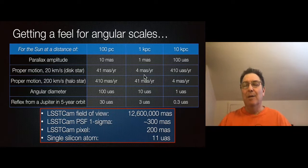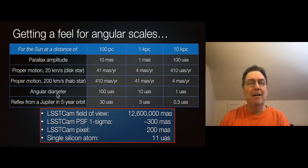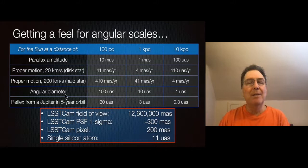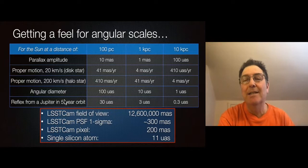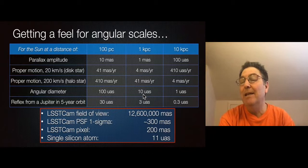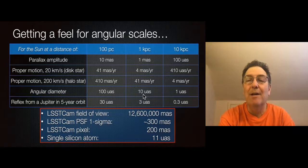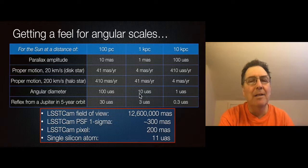For proper motions, a star moving at 20 km/s at a kiloparsec moves about 4 milli-arcseconds per year — a few tens of milli-arcseconds over the 10-year LSST survey. The sun's angular diameter viewed at disk distances is only about 10 micro-arcseconds, far smaller than LSST's ~0.7 arcsecond resolution. So treating stars as point sources is an excellent approximation.